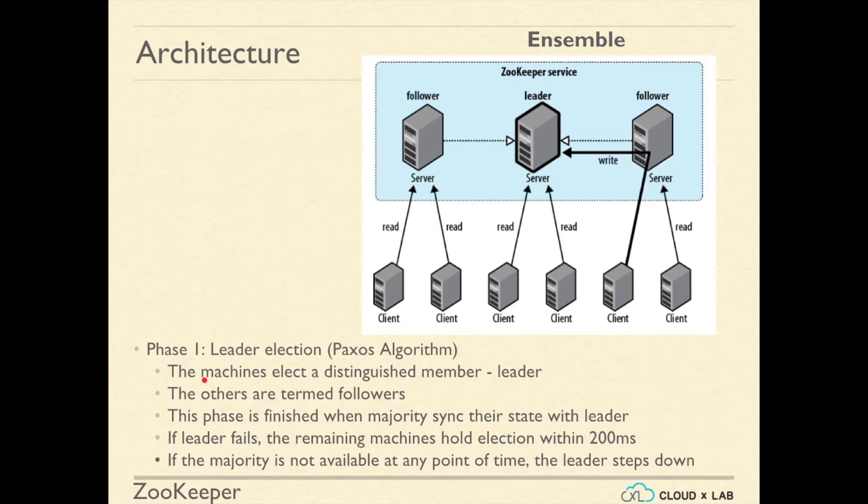This way, a distinguished member called Leader is elected. The rest of the servers are termed as Followers. Once all of the followers have synchronized their state with the newly elected Leader, the election phase completes. The election does not succeed if the majority is not available for vote.